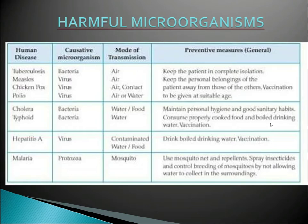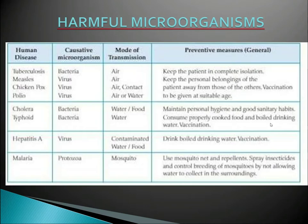Pathogens can also spread through direct contact with an infected person or be carried by an animal. Microbial diseases that spread from an infected person to a healthy person through air, water, food, or physical contact are called communicable diseases — such as cholera, common cold, chickenpox, and tuberculosis. When an infected person sneezes, thousands of pathogens are spread in the air through fine droplets of moisture, potentially infecting healthy people who breathe in that air.